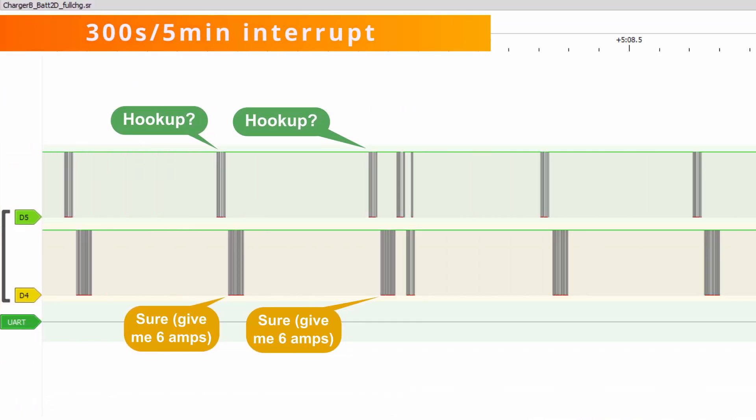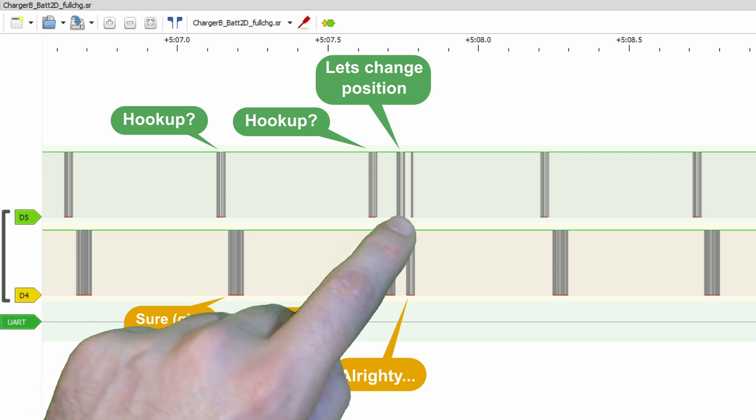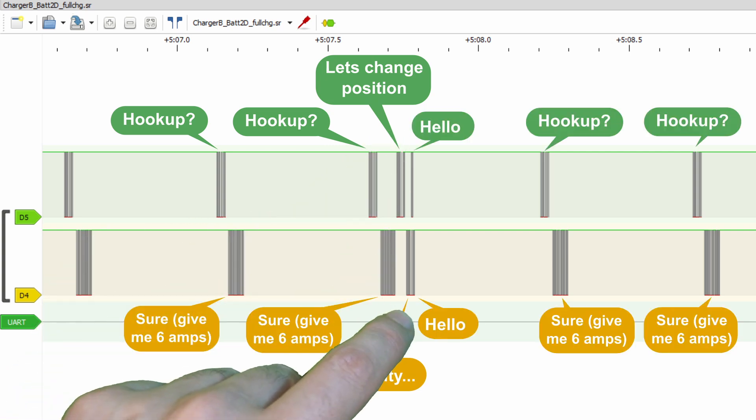The fifth and final message type is a weird little interrupt that happens every 300 seconds where the charger says 'let's change position.' The battery says 'alrighty,' forces a break, they say hello, and then jump straight back into it.